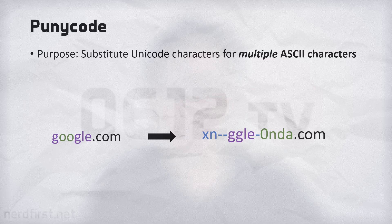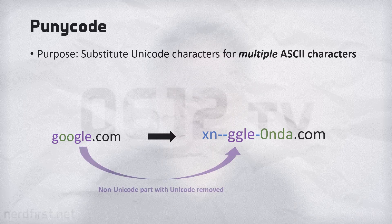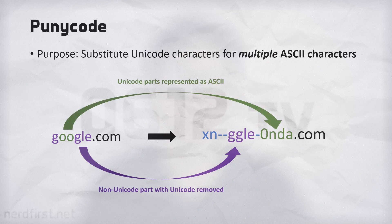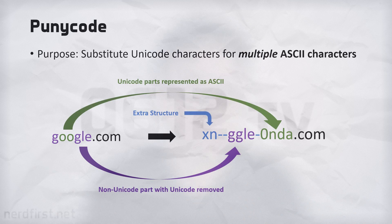It has a name — this is called Punycode. The idea is that the non-ASCII characters are taken out and represented at the back of the string, after a separator which is a dash. In order to visually indicate that this is a Punycode-encoded URL, a little prefix — "xn--" — is added to the front as well. So that's basically an ASCII-friendly substitution of our Unicode URL.